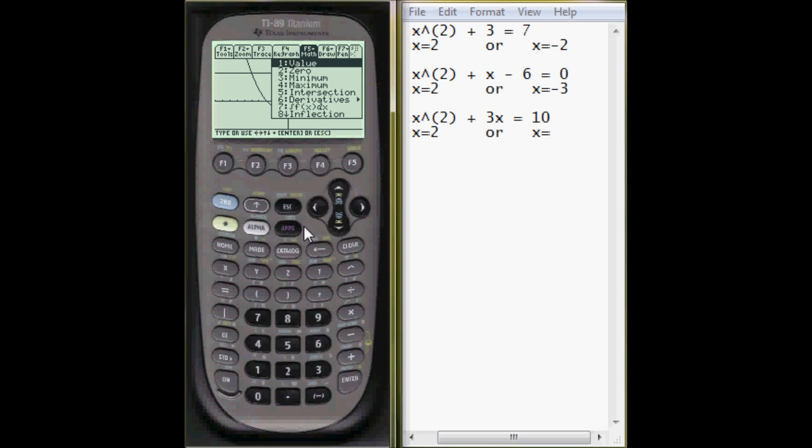F5. Select 5 for intersect. First curve will be this one. Second curve. Lower bound, I will estimate to be 1, 2, 3, 4, 5, 6. That's negative 6. And on the upper bound, let's say negative 2.